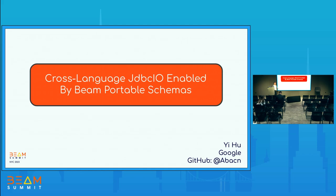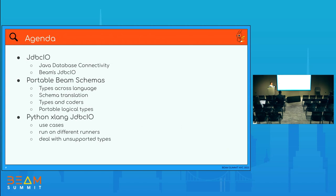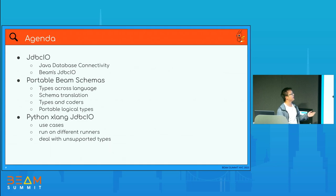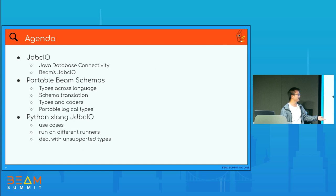In the last talk, Ahmed mentioned something about the Beam portable schemas — Beam rows, the restrictions for those rows and types — and I will cover those in this talk. I'll first go through Beam's JDBC IO, then dive deeper into the portable Beam schema architecture, and finally go back to JDBC IO in the context of Python cross-language with some use cases. Ahmed also mentioned we have some restrictions, and we have workarounds to deal with those unsupported types.